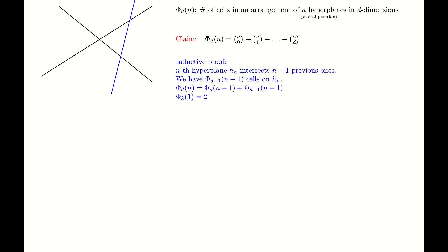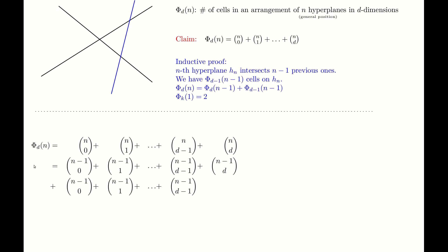We would like to show that this recursion is solved by the given formula. To do that, we simply need to verify the following equality: if you write φ(n, d) as the given summation, it equals the two summation terms from the recursion. To verify this, we use the following identity. Observe that choosing 0 from n-1 is the same as choosing 0 from n, so these two terms both equal 1. For the remaining terms, this term plus this term equals the next term, and so on.